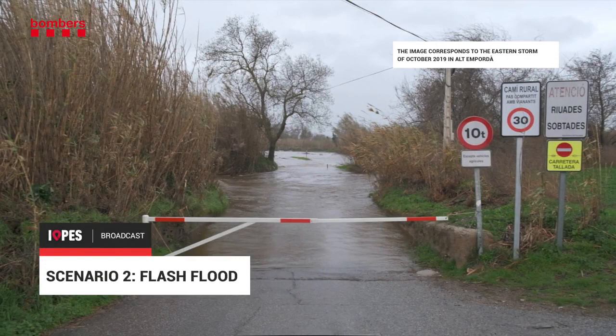An intense weather event brings sudden and intense rainfall across the region of El Moyanes in Catalonia, favorable to thunderstorm activity. Copious rainfalls of up to 100 mm in 3 hours occur in the area.